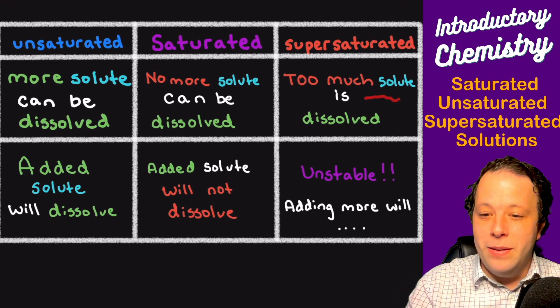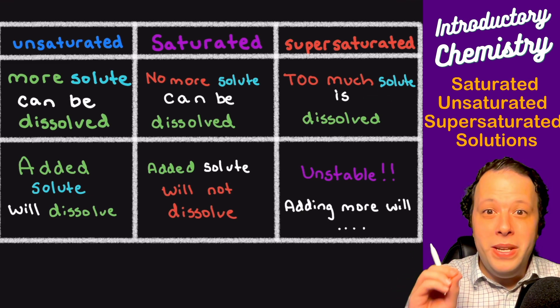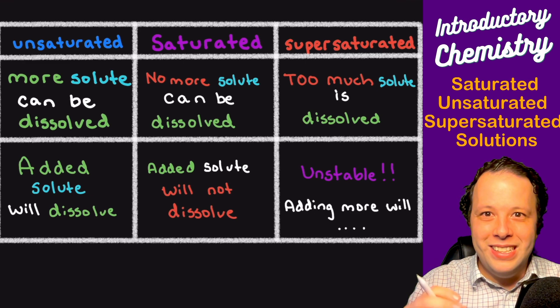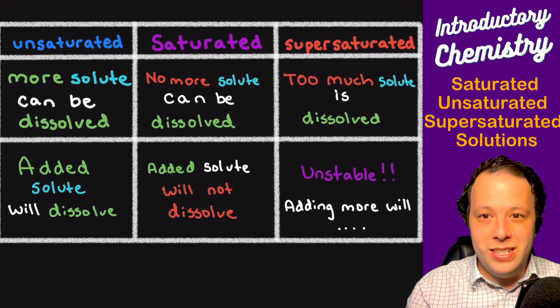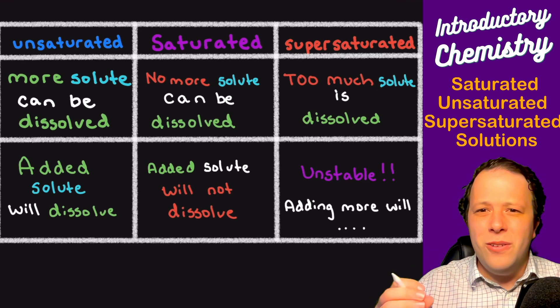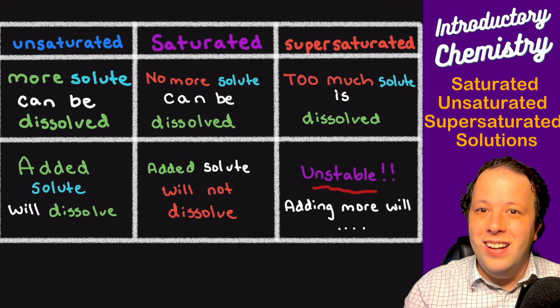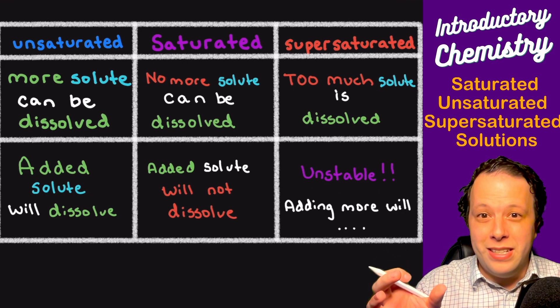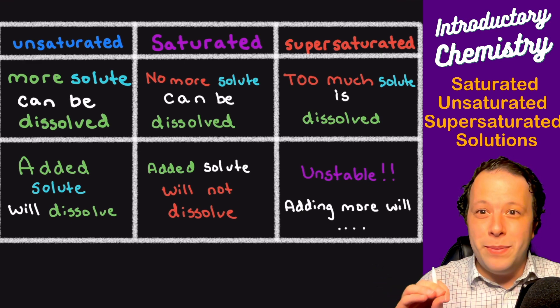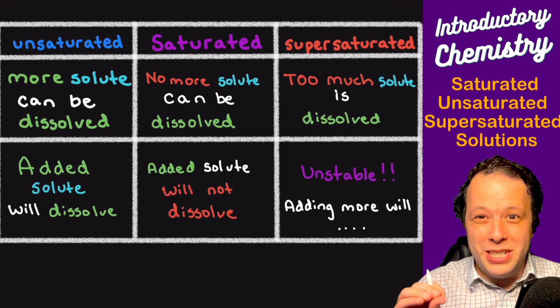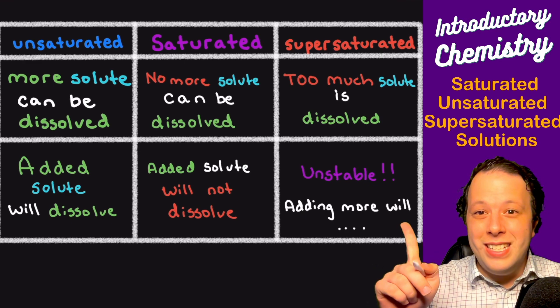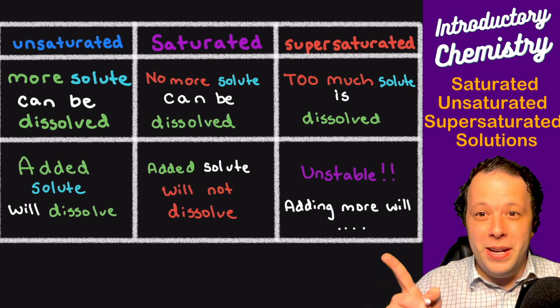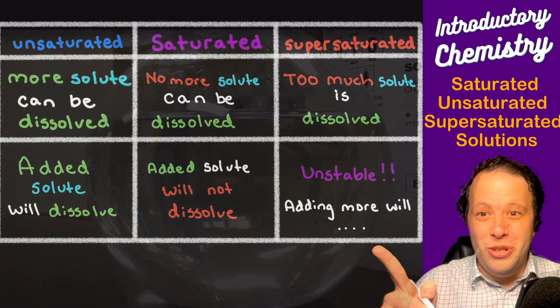Supersaturated means that somehow you manipulated the science behind it and there's already too much dissolved. But how is that possible? Well this is unstable. This is all about trying to manipulate the temperatures to make this possible. We're going to talk about temperature trends and how that plays a role as well. Let's take a look at what supersaturation is all about with a demo.